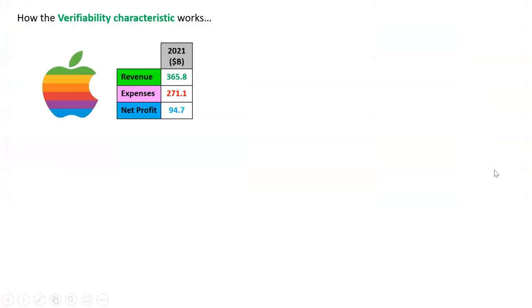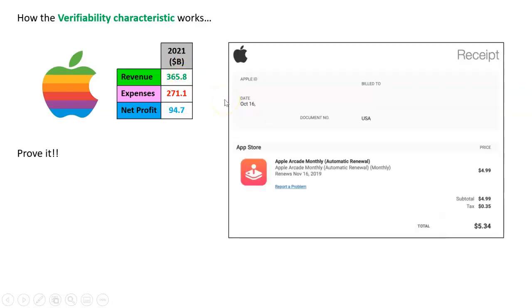How does this work? Let's take Apple. These are real figures for Apple. The revenues in 2021 were $365.8 billion, expenses were $271.1 billion, and the net profit was $94.7 billion. I mean, that's just what they told us. So I guess what verifiability is about is prove it. Apple should be able to prove every single one of these figures.